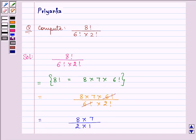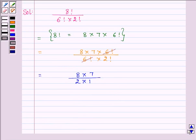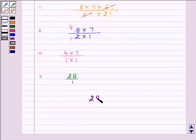as 2 multiplied by 1. On simplifying we have 4 multiplied by 7 divided by 1 multiplied by 1 which gives us the answer as 28 by 1. So the required answer is 28.